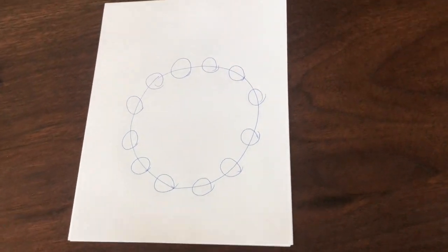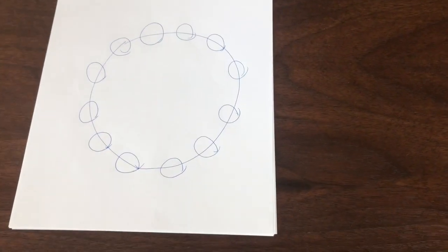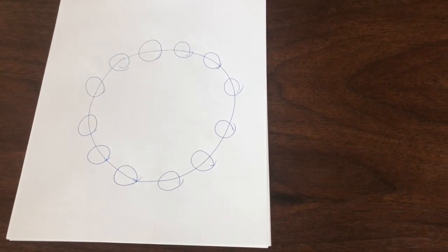Now, okay, the game is we're gonna go back and forth, back and forth crossing off circles. We can either cross off one or two circles at a time.